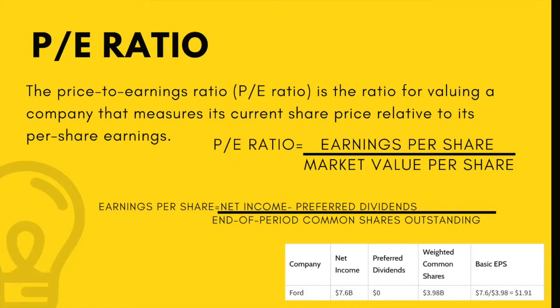The formula for PE ratio is the market value per share divided by the earnings per share. Earnings per share is calculated as the company's profit divided by the outstanding shares of its common stock — the higher a company's earnings per share, the more profitable it is considered. The formula for calculating earnings per share is net income minus preferred dividends, over the end-of-period common shares outstanding.